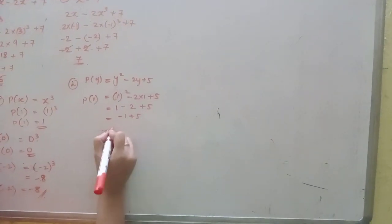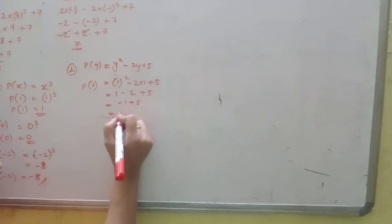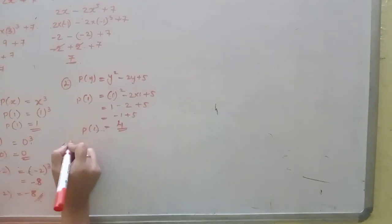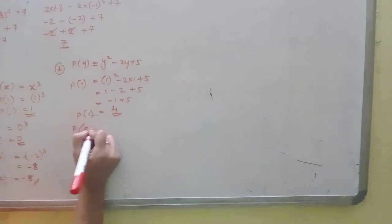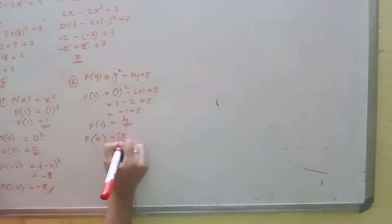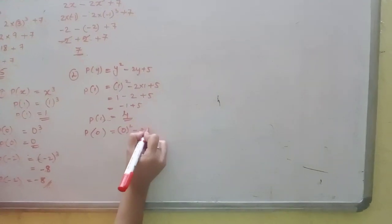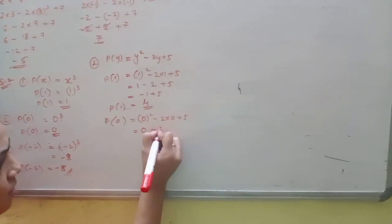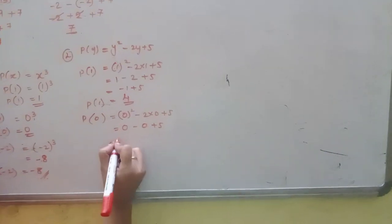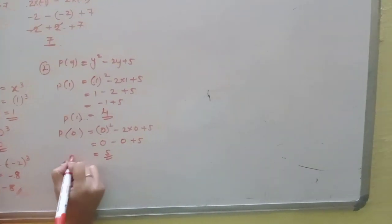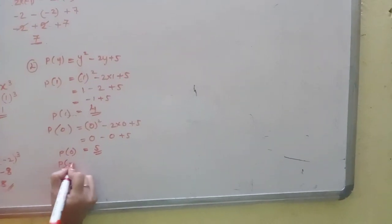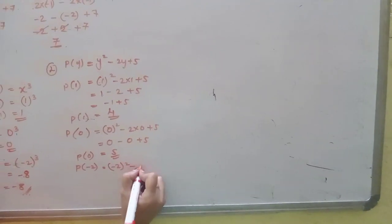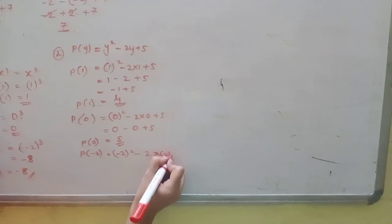P(0) = 0² - 2 into 0 + 5 = 5. P(-2) = (-2)² - 2 into -2 + 5.